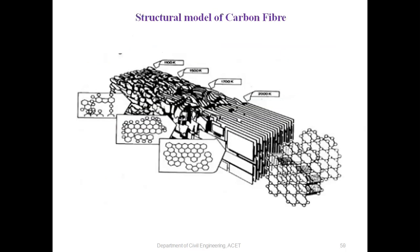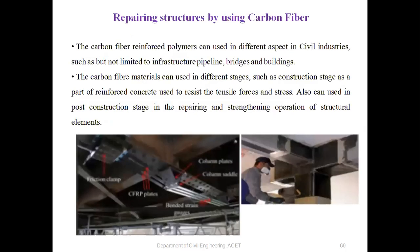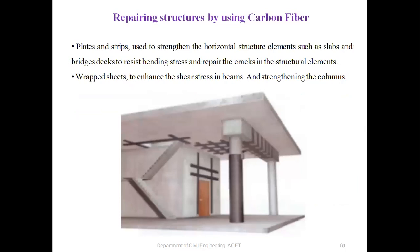This is the structural model of carbon fiber — you can see how complex it is. For repairing structures using carbon fiber: CFRP plates are applied on the total structure, and then carbon fibers are attached to it so that the repair is done and the structure gains more strength. Plates and strips are used to strengthen the structure, and carbon fiber sheets are wrapped around beams, providing greater strengthening.